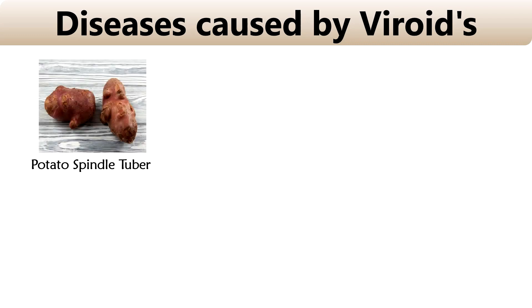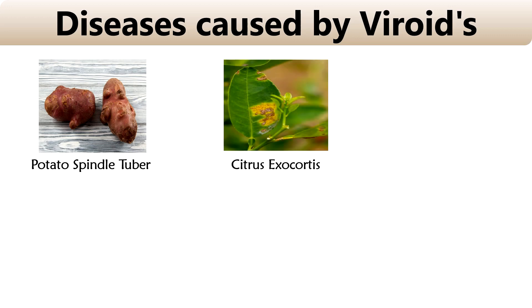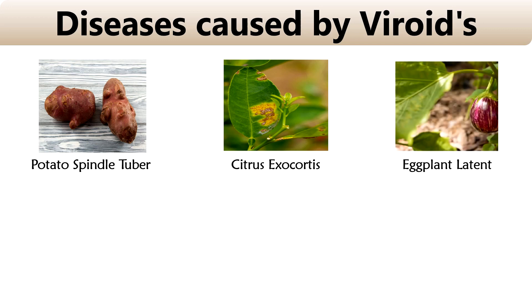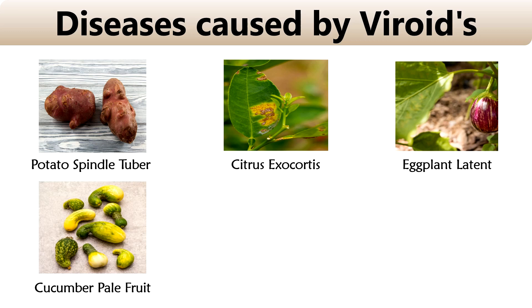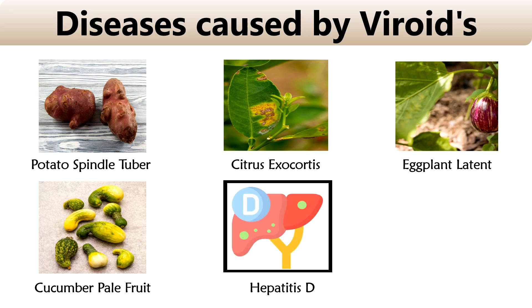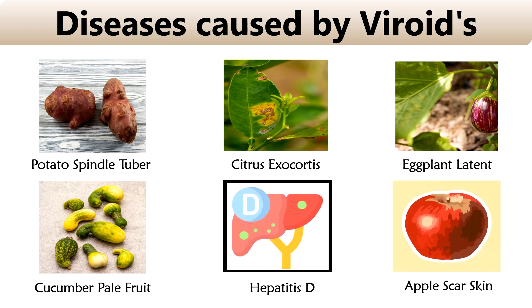Some viroid diseases with their examples: Potato spindle tuber viroid occurs in potatoes. Citrus exocortis viroid occurs in citrus plants. Eggplant latent viroid occurs in eggplants. Cucumber pale fruit viroid occurs in cucumber. There is one viroid disease that occurs in humans — Hepatitis D, which infects the liver. Apple scar skin viroid occurs in apples.